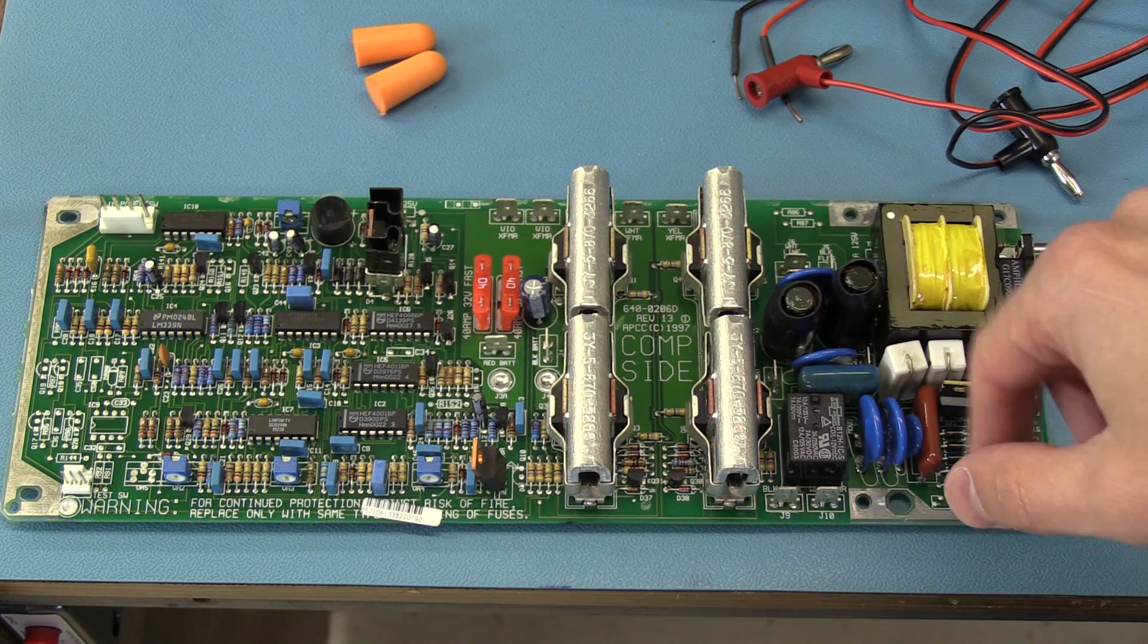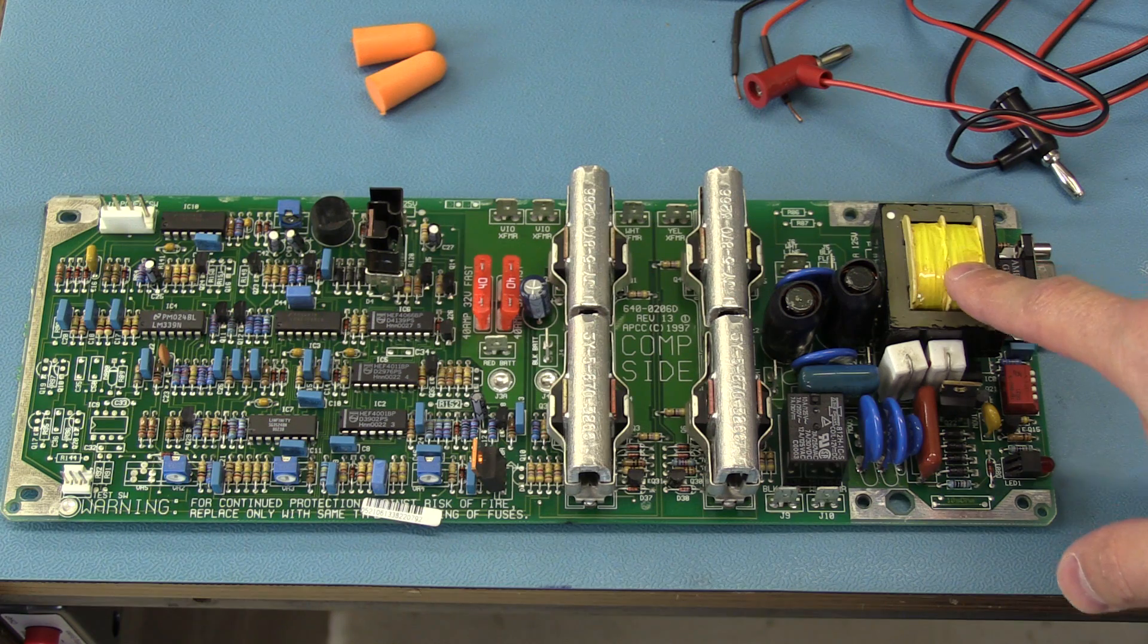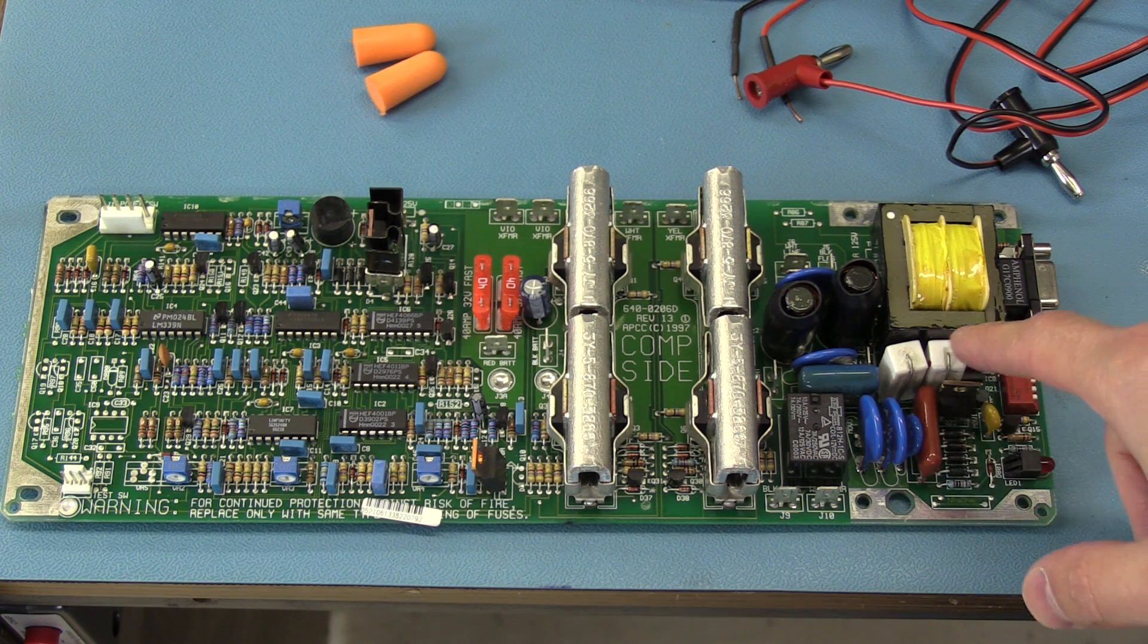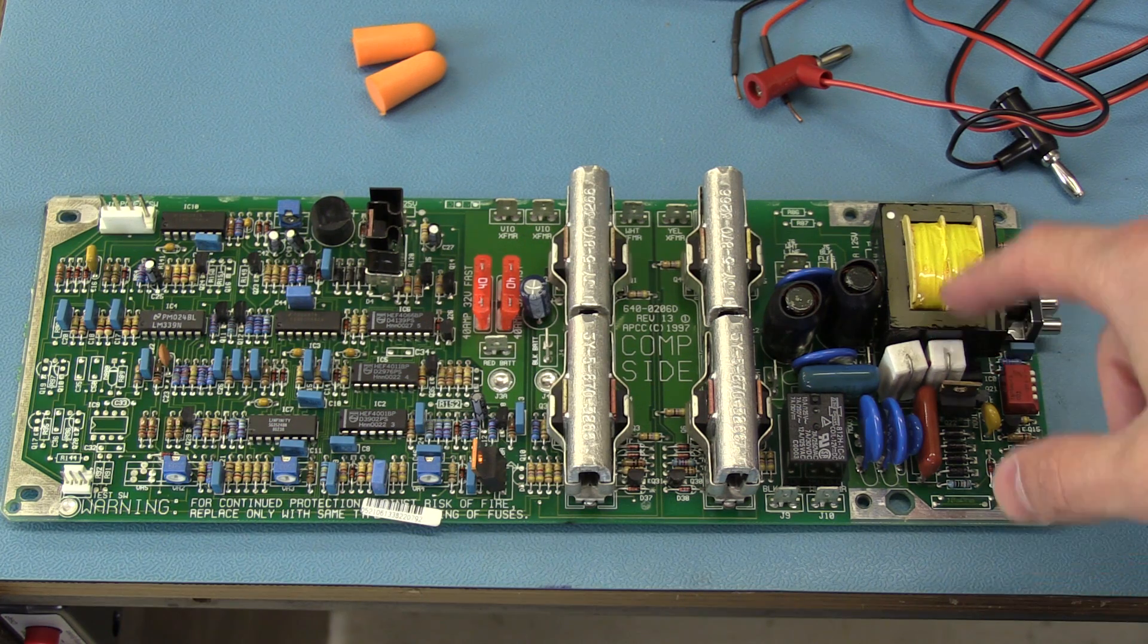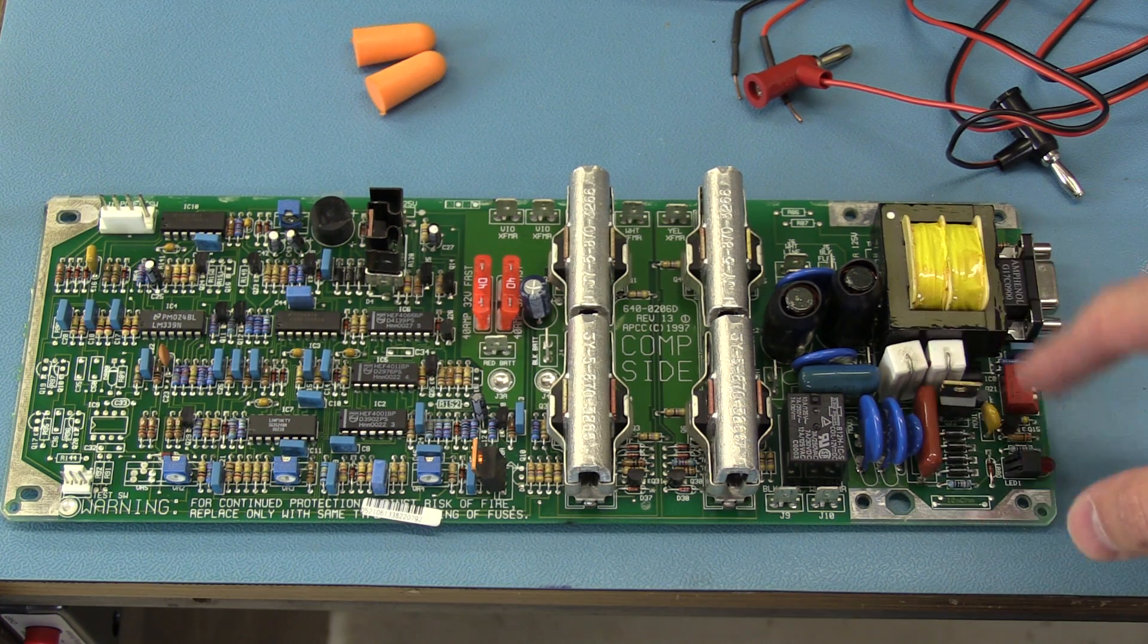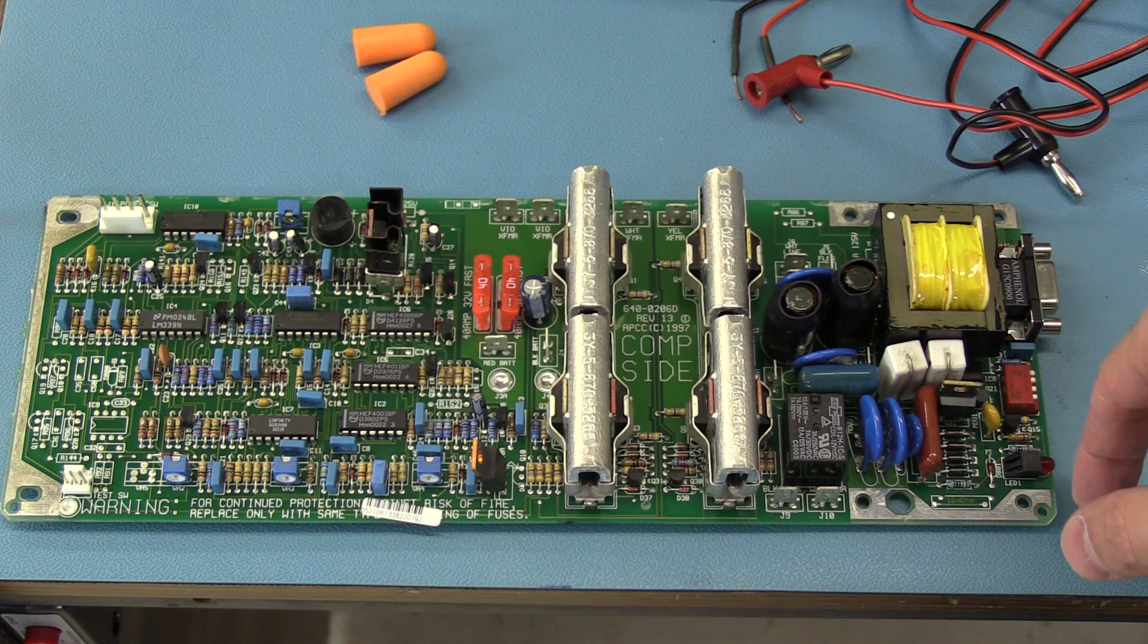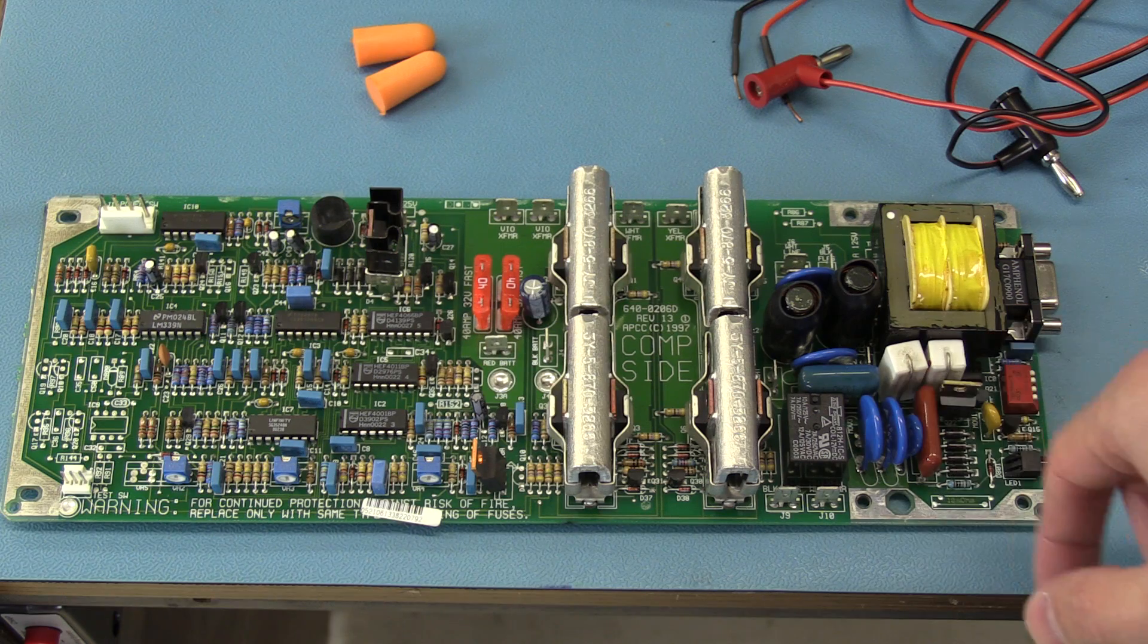Plus there's a DC supply. You've got the transformer and looks like a bridge rectifier and such here for charging the battery. I don't think it's even regulated, just simple, probably current limited. Maybe that's what these power resistors are for.